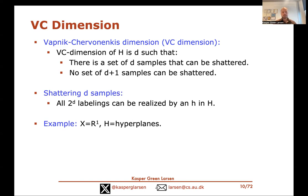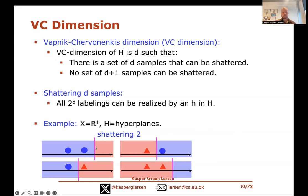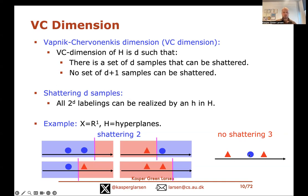For a concrete example: if the input domain is R^1 and H is hyperplanes in R^1 — a threshold on the real line, returning plus one on one side and minus one on the other — we can shatter two points, since all four labelings can be generated. But no three points can be shattered, because the labeling with red on the two outer points and blue on the innermost cannot be generated by any hyperplane. So the VC dimension of hyperplanes in R^1 is 2. In general, the VC dimension of hyperplanes in R^d is d+1.